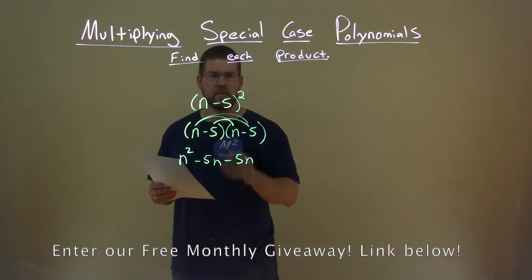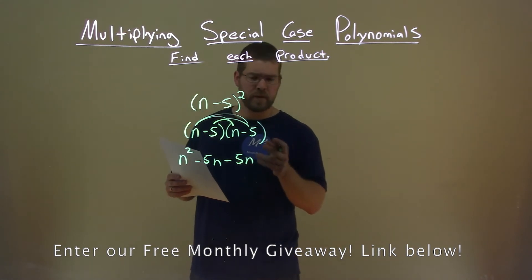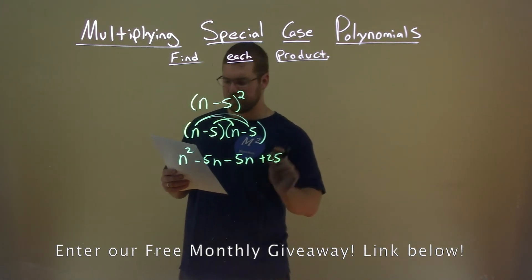And minus 5 times a minus 5, well, two negatives make a positive when you multiply, 5 times 5 is 25. Okay.